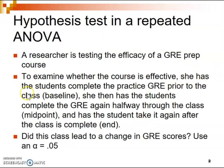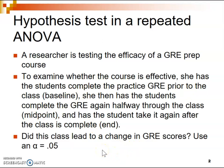We can't conduct a t-test because it's limited to comparing only two different time points or conditions. Since we have three different time points measured within the same group of participants, our dependent variable is GRE scores, and there is just one factor — the time point at which the test is taken — we will conduct a one-way within-subjects ANOVA.